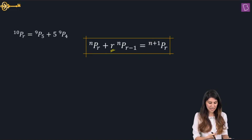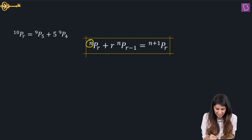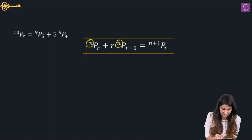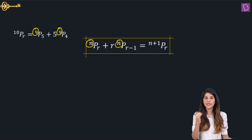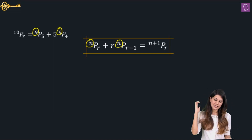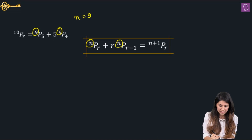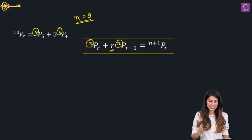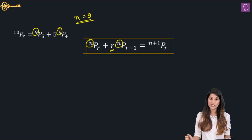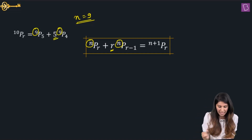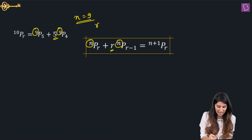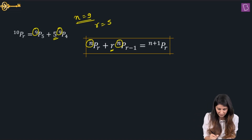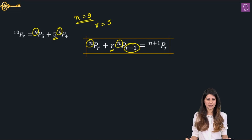Let us understand this formula. Here both N values are the same — this is 9 and this is also 9, talking about the right-hand side. So N here equals 9. The term in front of NPR minus 1 is R, and what we have is 5.